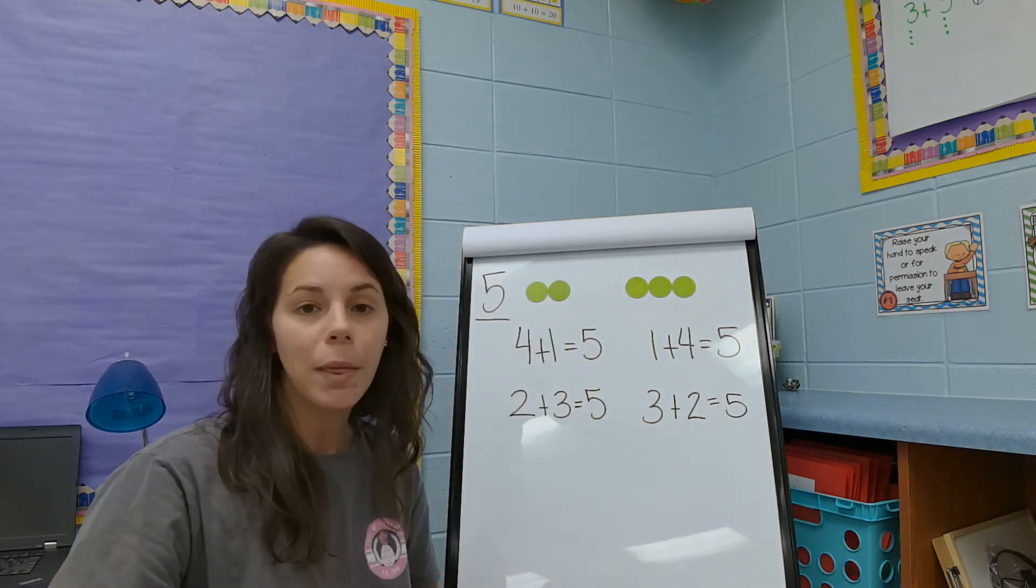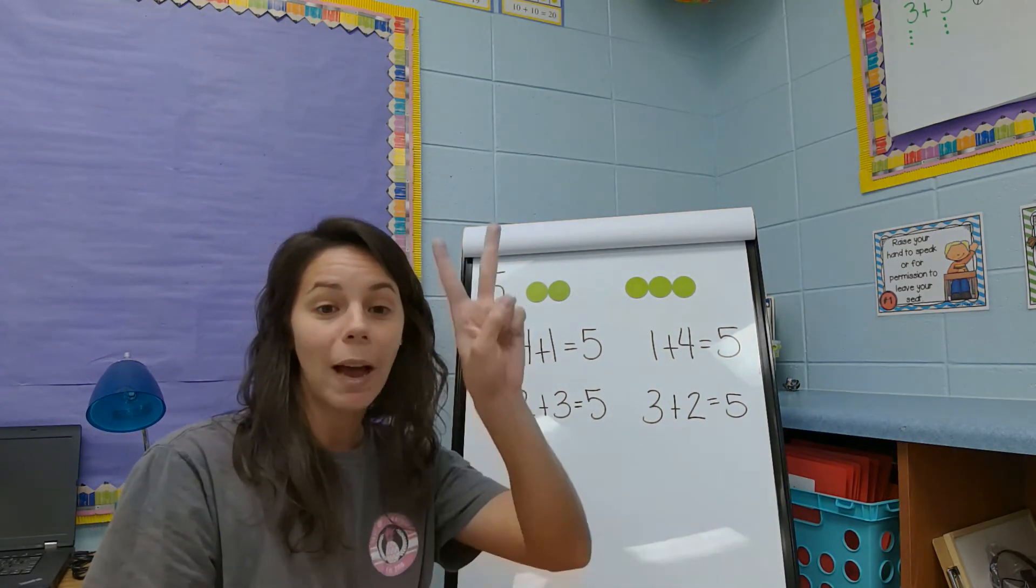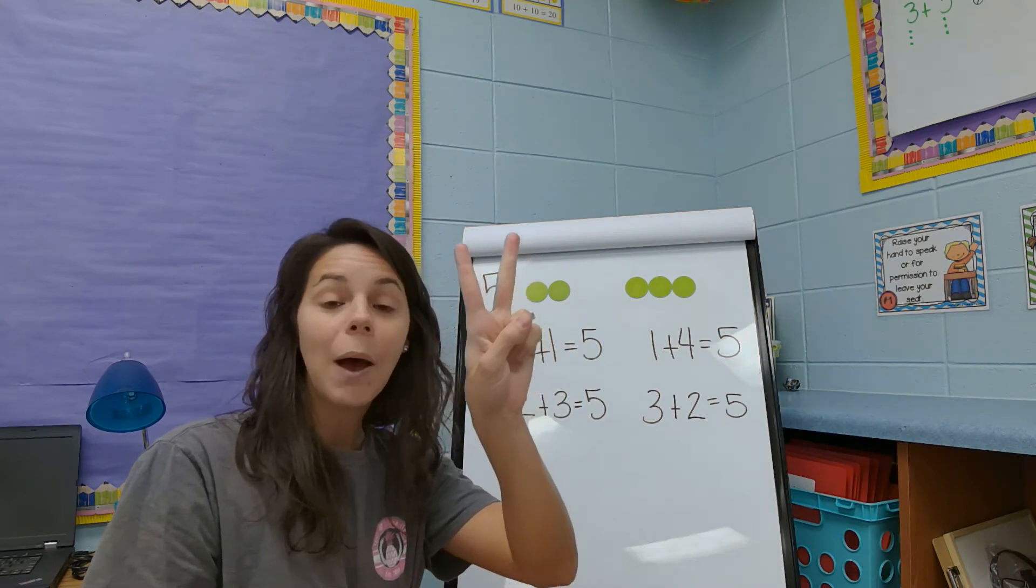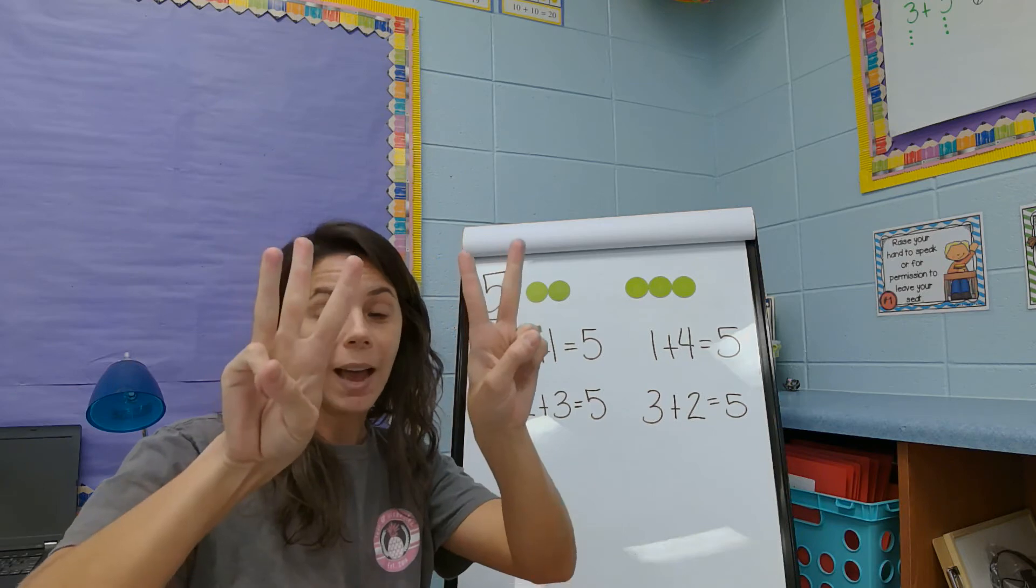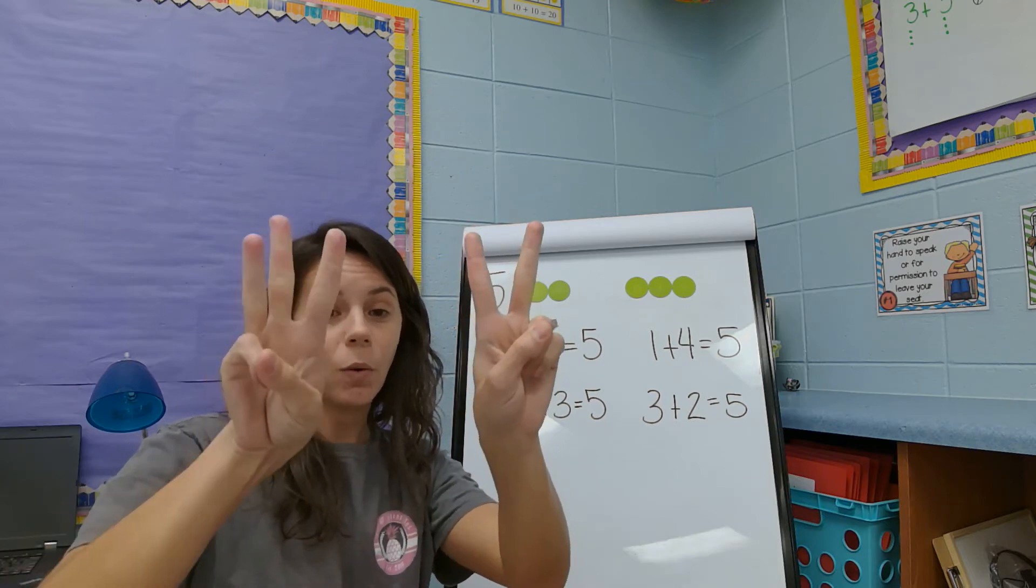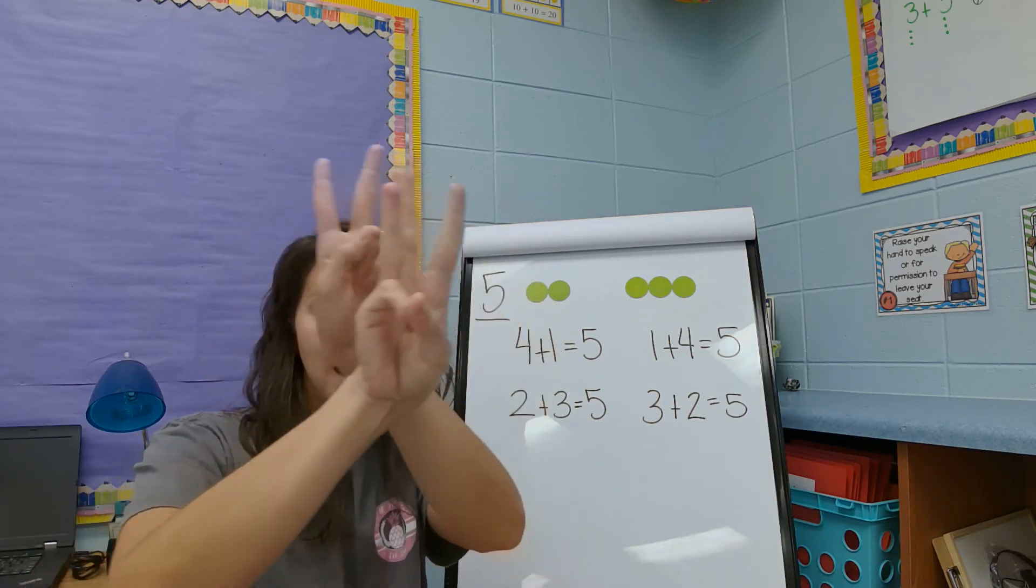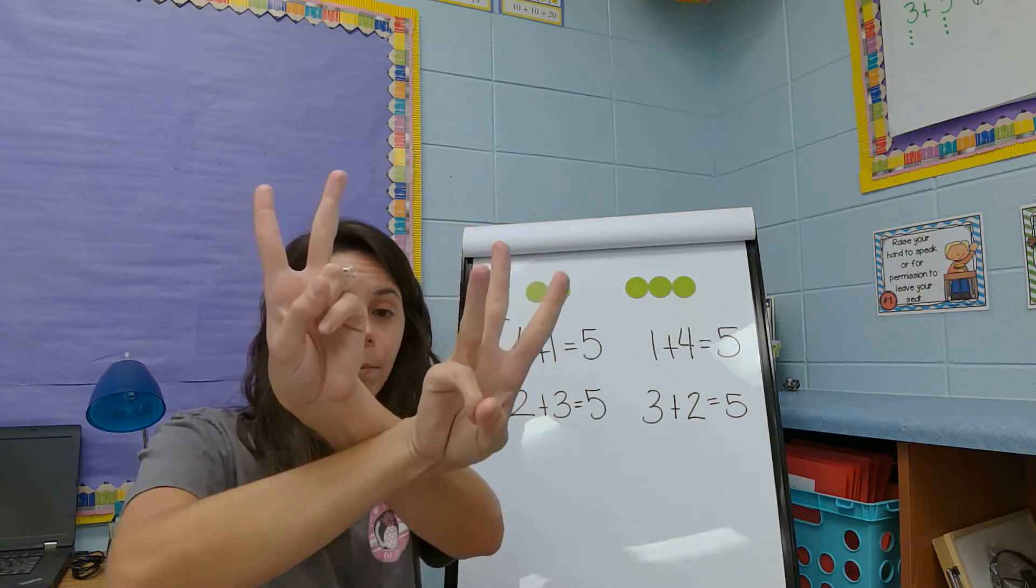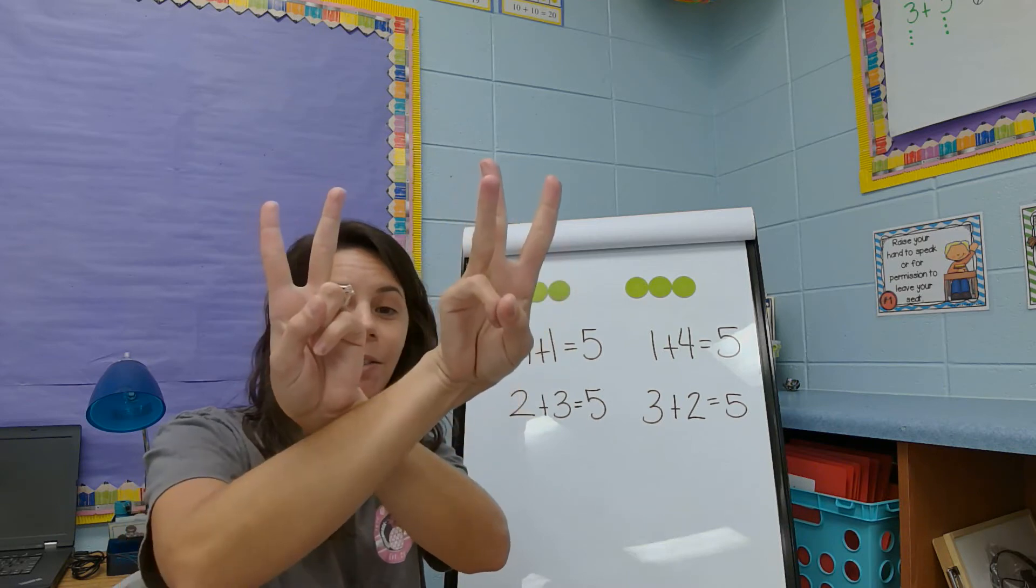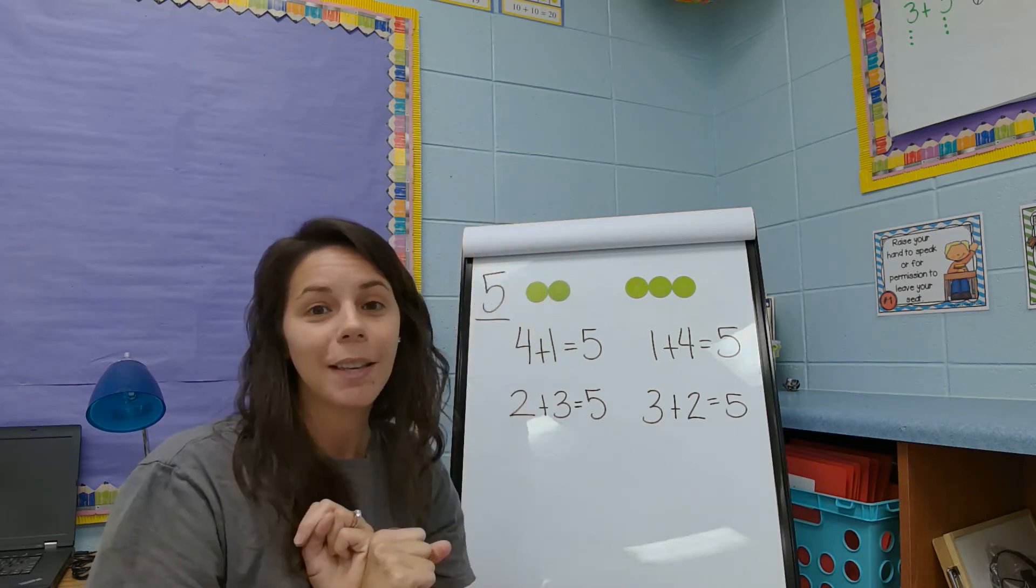We could even do that with our hands. Do it with me. So if I have two, let's count on till we get to five. Three, four, five. Two and three equals five. If I switched these numbers around, would I still have five? Yeah. I still have three and two, which makes five.